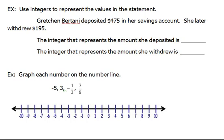In this example, we're just going to be reviewing understanding how to write integers. So the very first one says the integer that represents the amount she deposited is... Well, in order for us to write that, we would have to write it as the positive $475, indicating that we are adding money. So that would be a positive number.